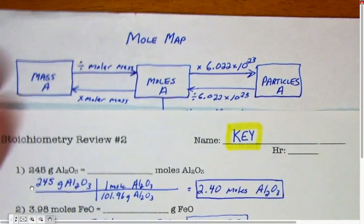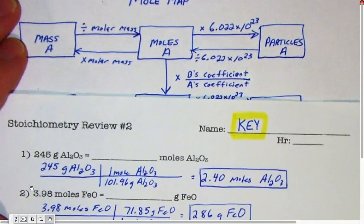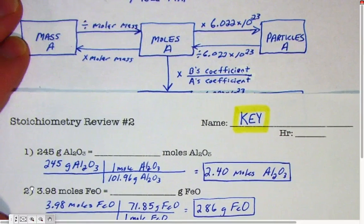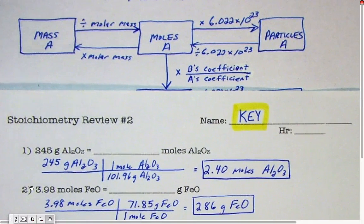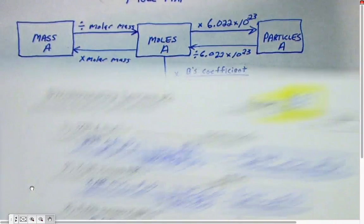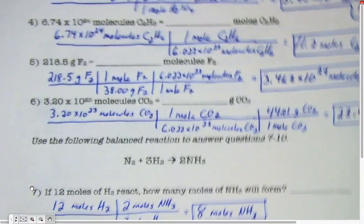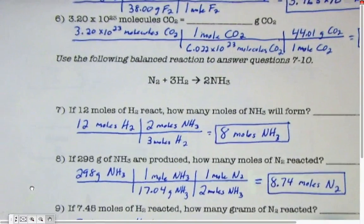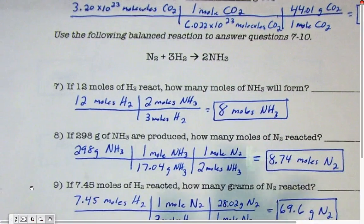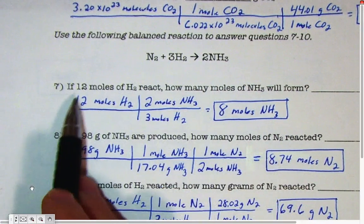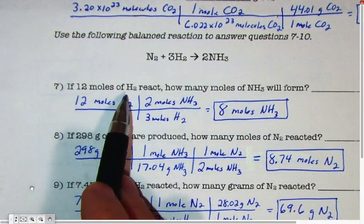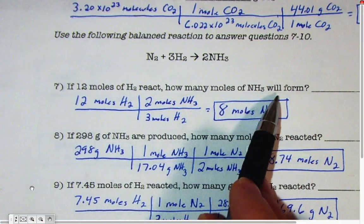Now when doing stoichiometry problems where you have an equation and you have some coefficients in that equation because it's balanced, what you're doing is you're starting out knowing something about one chemical and then figuring out something about a different chemical. For example, down here, I have this chemical reaction, and the first question was if 12 moles of H2 react, how many moles of NH3 will form?